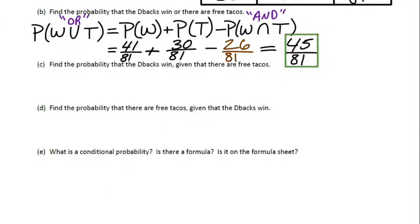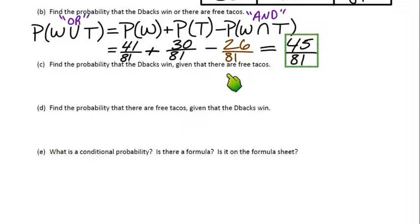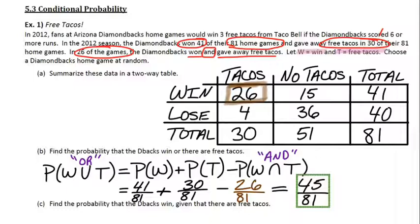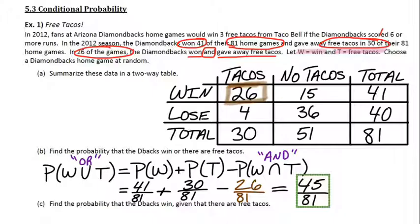Part C asks: find the probability that the D-backs win, given that there are free tacos. So we've got this really specific condition — there's only so many nights where there's free tacos. On those nights, how many games did they actually win? Looking back at our table, they gave tacos away 30 times during that season. It's not like they won every single time — 26 out of those 30 they actually won, and 4 out of those 30 they didn't win. So we're just looking at the nights that they had tacos — that's 30 total nights — and 26 of those were nights that they actually won.